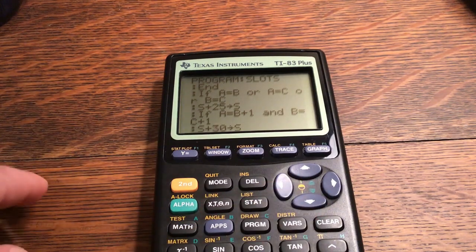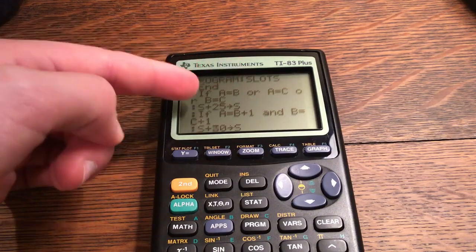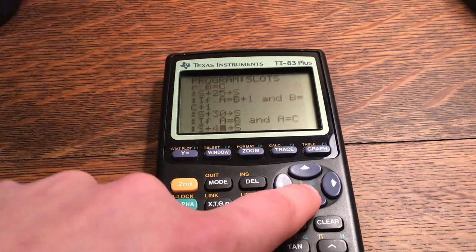If A equals B plus one and B equals C plus one, S plus 30 stored to S. So this is like if you get a one two three, or a two three four, or a four five six, stuff like that, all the different combinations there.